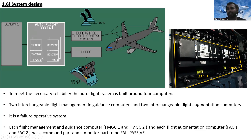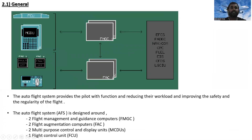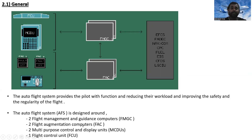Moving to system presentation — the auto flight system provides the pilot with functions that reduce workload and improve the safety and regularity of flight. It is designed around two flight management and guidance computers (FMGCs), two flight augmentation computers (FACs), two multipurpose control and display units (MCDUs), and one flight control unit (FCU).